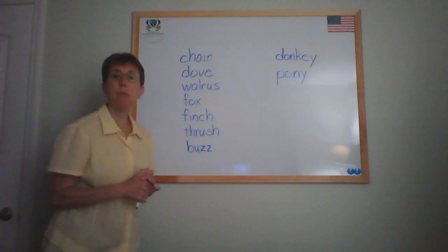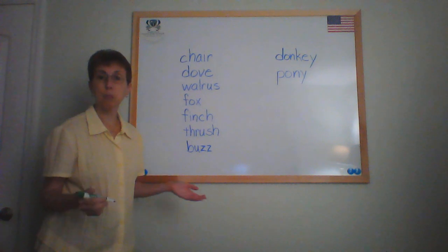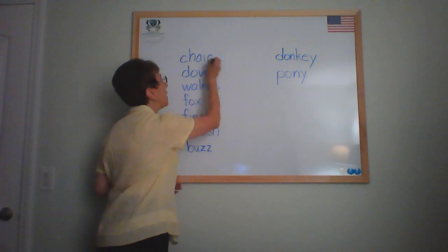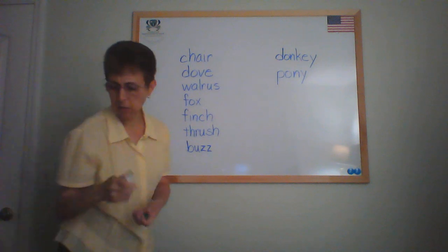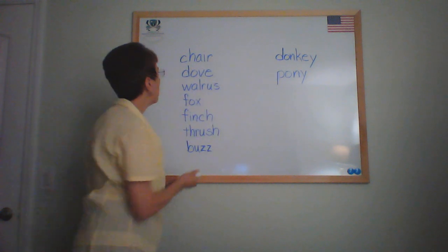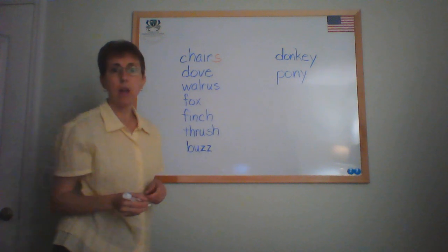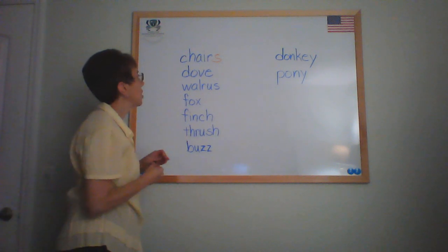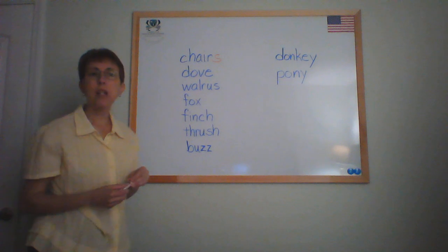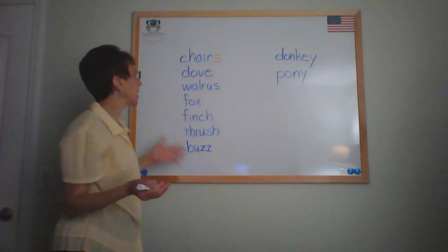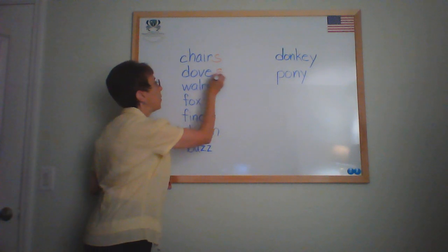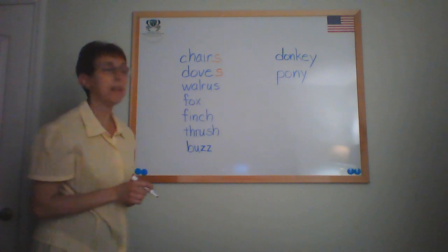So first rule: most times in making nouns plural, you will simply add S. So in this case, we're changing chair to chairs — we just add an S. Next word we have is dove. Dove ends with an E, but that doesn't change anything. It already ends with an E, and so once again it's a noun where we're simply just going to add S.